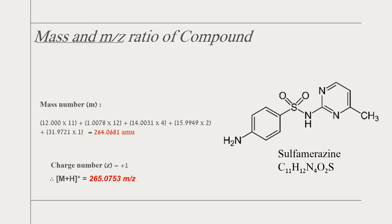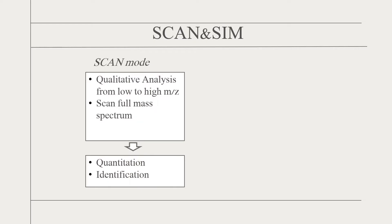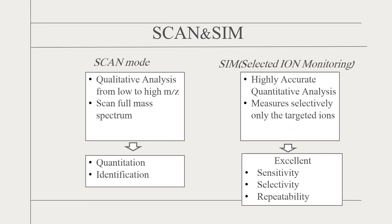LC-MS single quadrupole system is a basic model in the LC-MS family. It can be operated in scan mode or in SIM mode. In scan mode, mass spectra are obtained continuously during an analysis. The mass spectrum of the eluting peak can be used for identification or confirmation of a compound. The selected ion monitoring, or SIM mode, measures selectively only the targeted ions. SIM mode is used mainly for quantitation of targeted compounds due to its excellent sensitivity, selectivity, and repeatability.